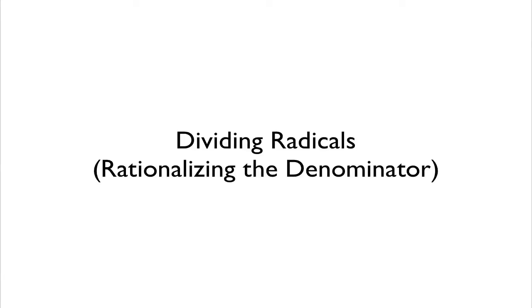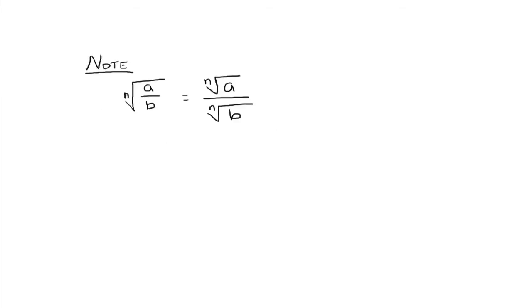In this video I want to talk about dividing radical expressions. We'll also get into rationalizing the denominator. So we have the nth root of a fraction, which can be written as the nth root of the numerator over the nth root of the denominator. And since roots are fractional exponents, the properties of exponents are what make this property true.